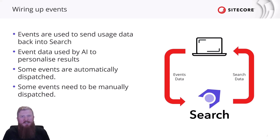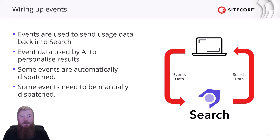Doing this creates a cycle of data flow. The user will request a page that may or may not have data that comes from the Search API. And then, as the user interacts with the site, events describing those interactions are dispatched back to Search. This usage data is then used to personalize any subsequent search data that comes out of the API, ensuring that the results they receive get more and more specifically tailored to their prior browsing history.